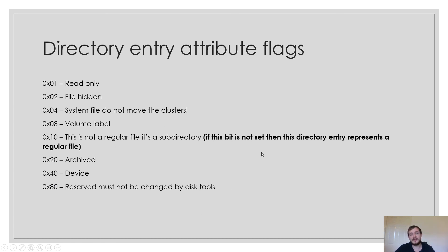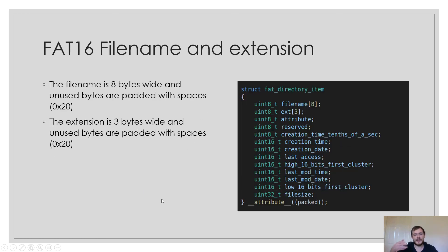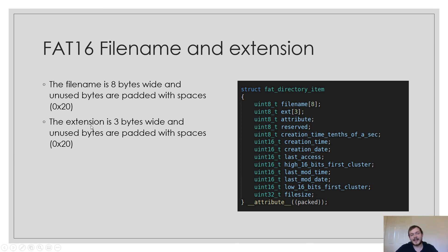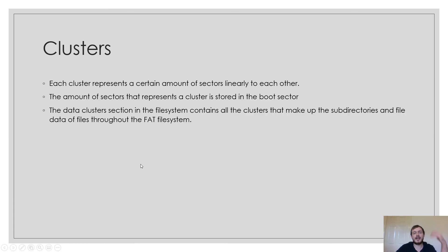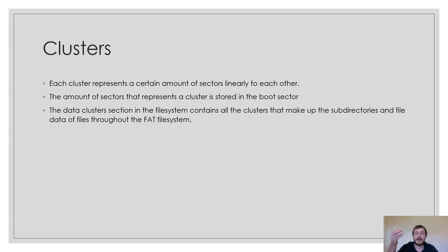There are special rules for the file name and extension. The file name is 8 bytes wide and unused bytes are padded with spaces — not null terminators. You know the file name is done when there's a space, which also explains why spaces are illegal in this file system. The extension is exactly the same: 3 bytes wide, unused bytes padded with spaces. Each cluster represents a certain amount of sectors linearly. For example, in the boot sector we might have 80 sectors per cluster, meaning one cluster is 80 sectors long. The data clusters section contains all the clusters making up subdirectories and file data throughout the file system.